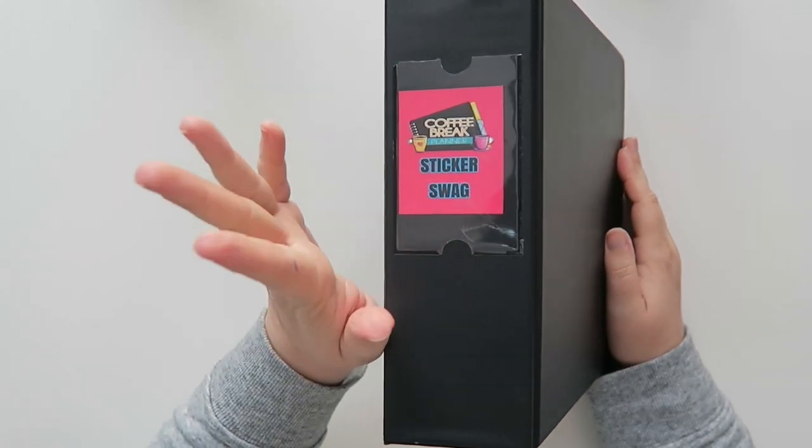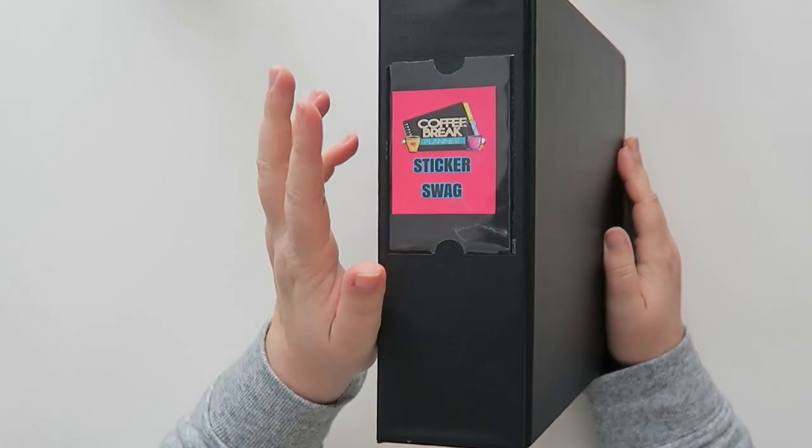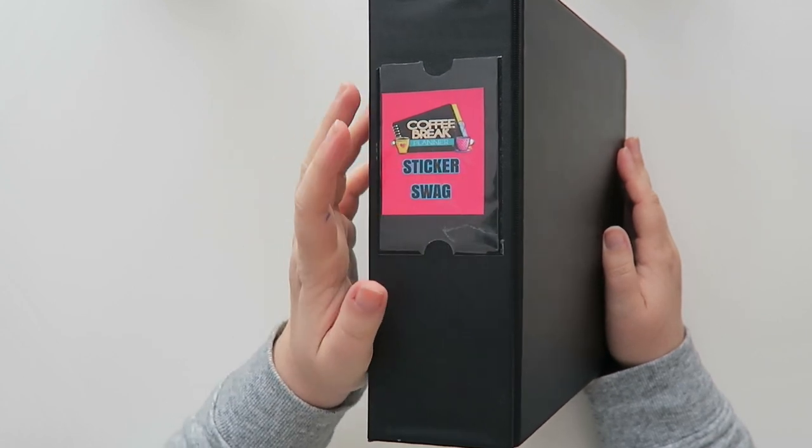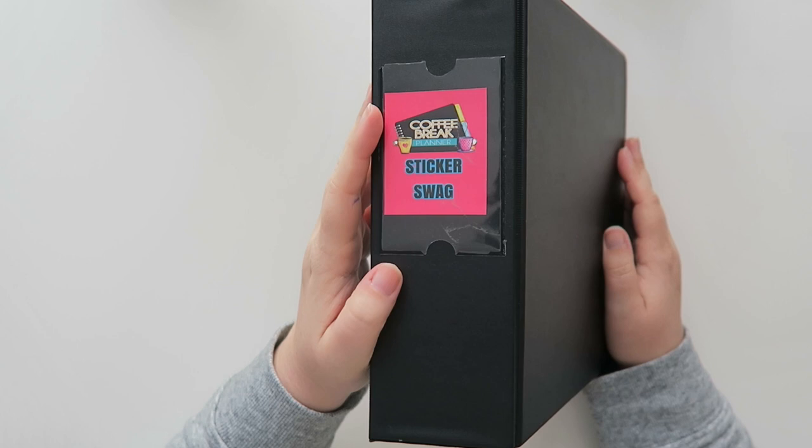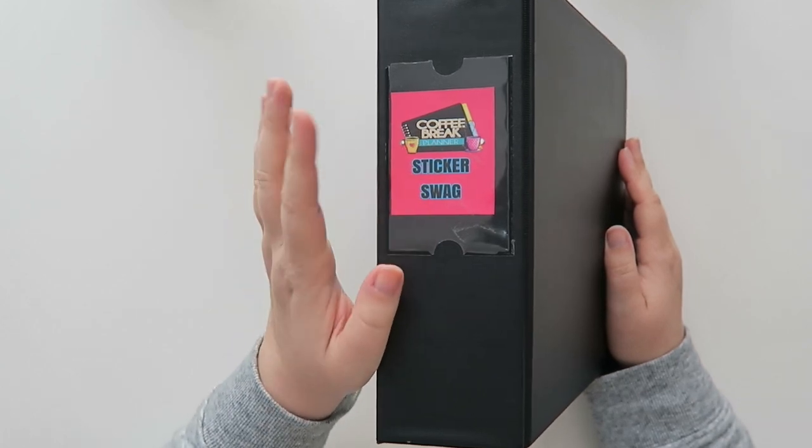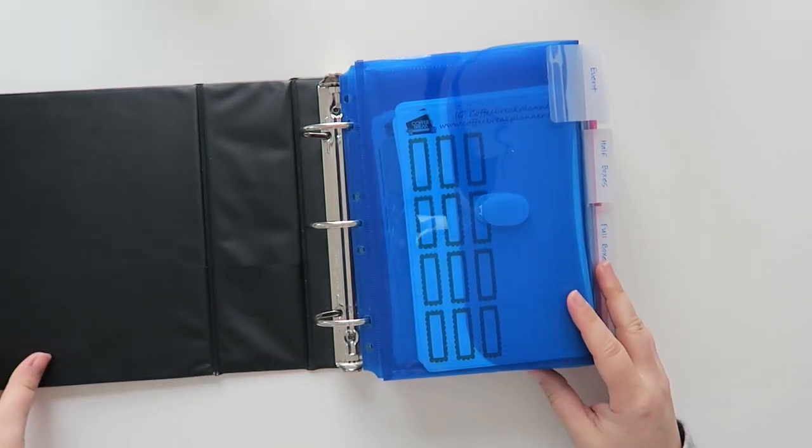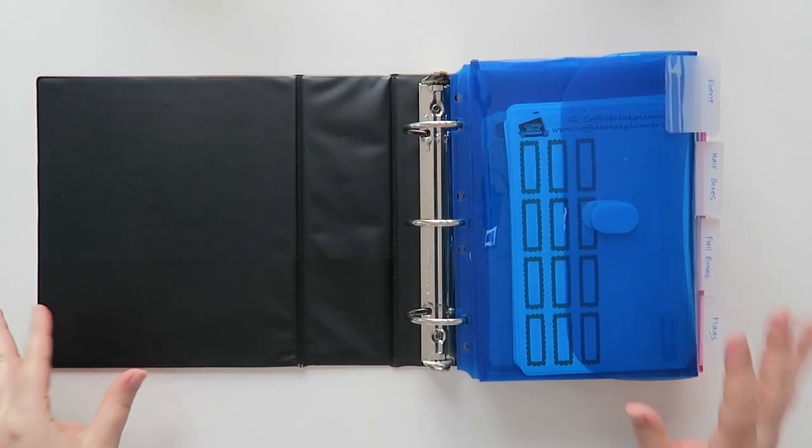This is the binder I've been using for quite a while. It's a very thick binder that I got on Amazon. I think it's an Avery binder. I will link it down below if you're interested. I did a video not too long ago showing my sticker organization as to how I put this together. I will link that video up in a card if you're interested.